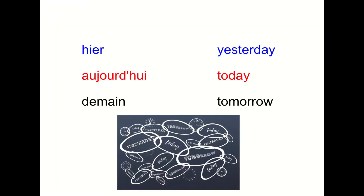A little bit more vocabulary. If you want to talk about yesterday, we say hier. Hier. And if you want to say the word today, we say aujourd'hui. Aujourd'hui. And then tomorrow is demain. Demain.